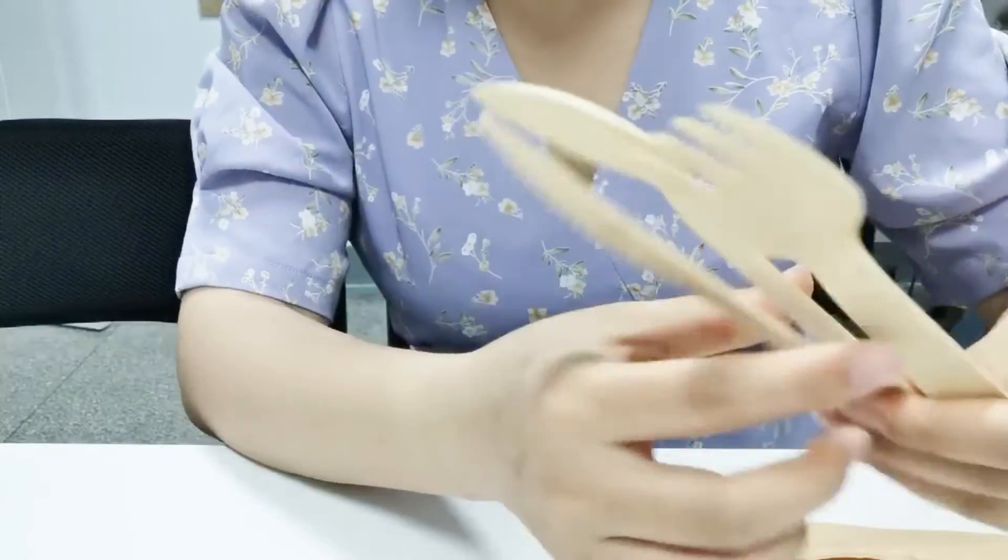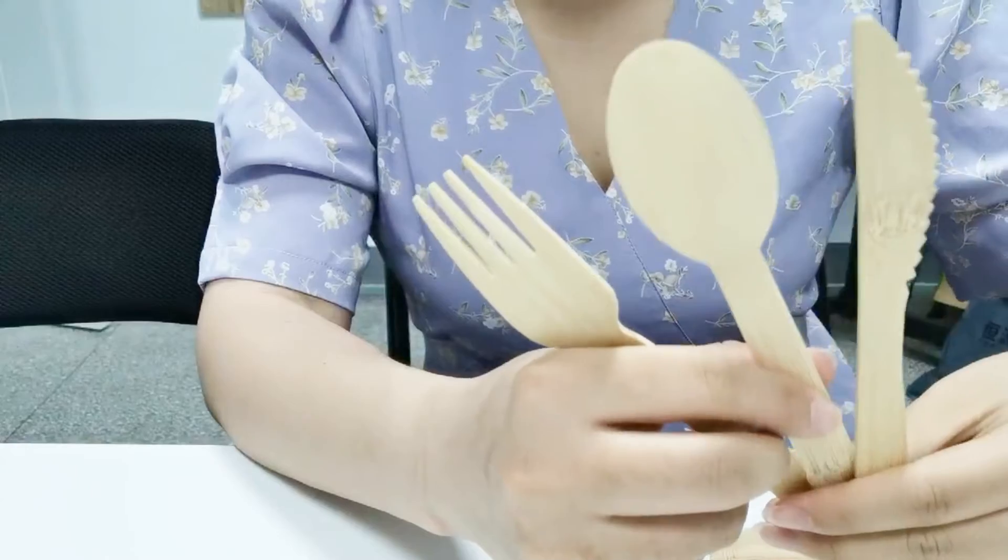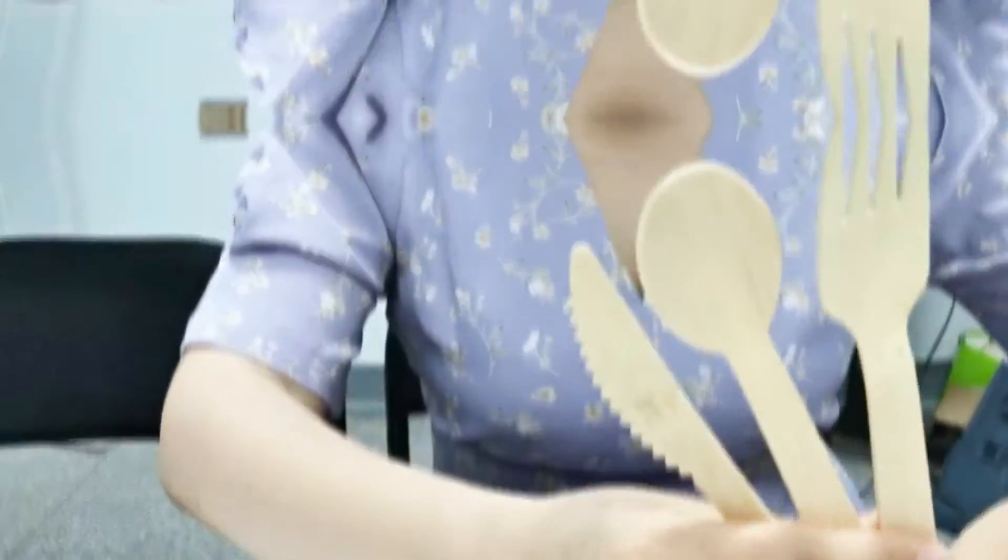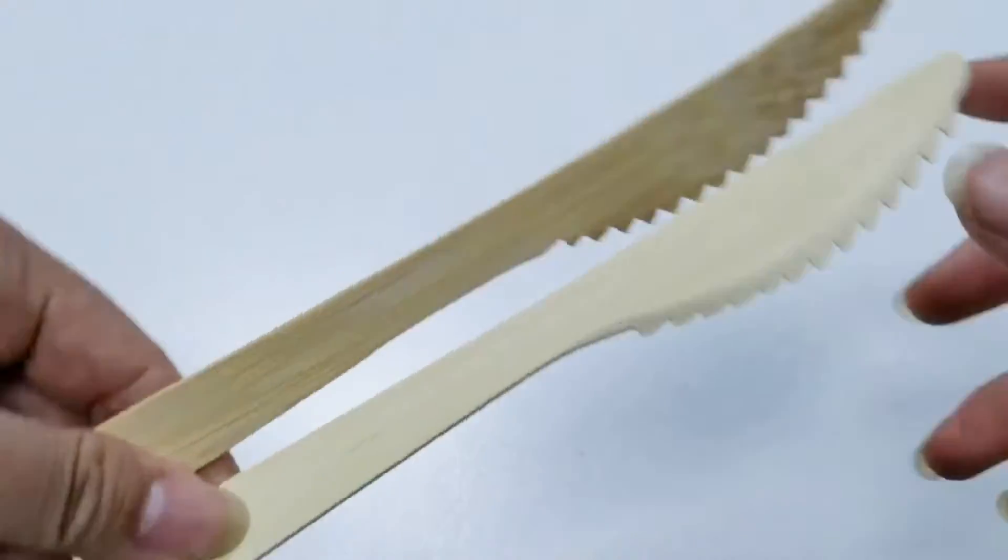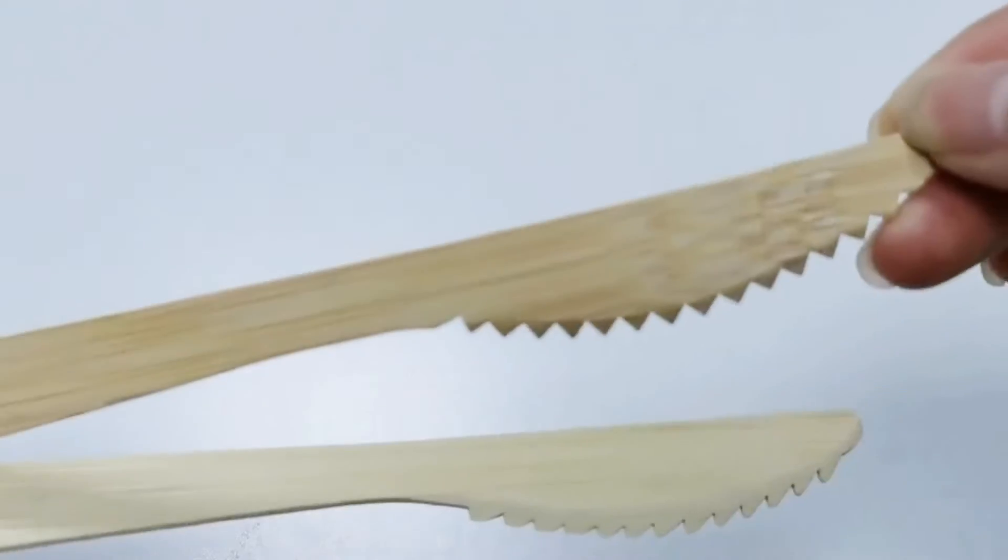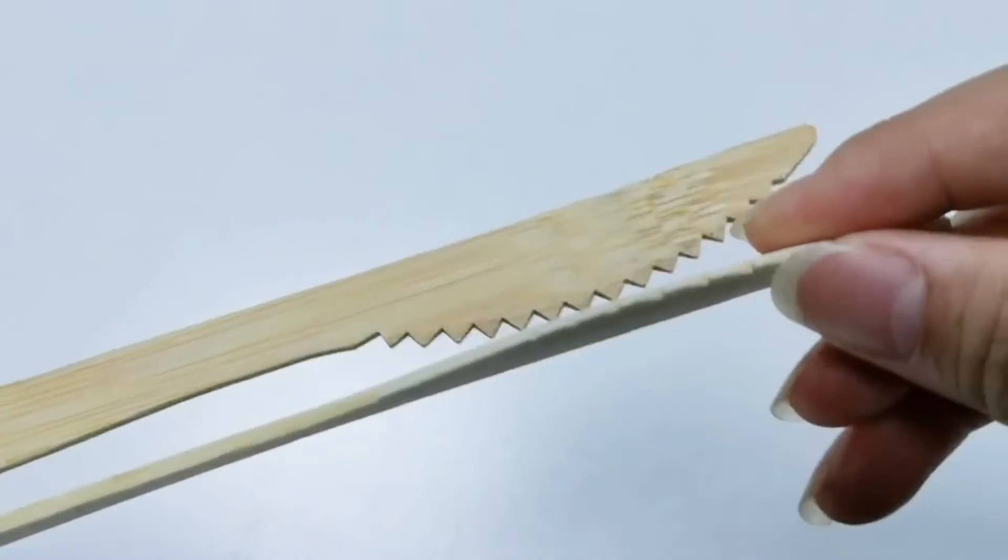Third, pressing. Automatic: bamboo spoons about 3,000-4,000 pieces per hour, bamboo forks about 8,000-9,000 pieces per hour. Manual: 5,000-10,000 pieces per day.